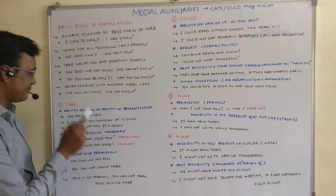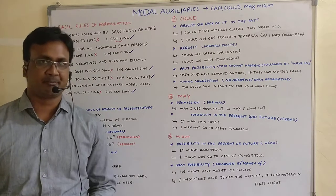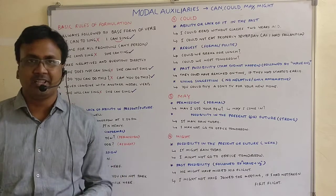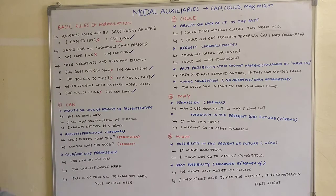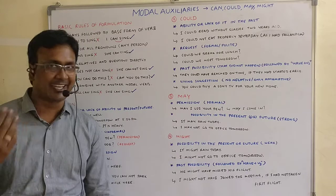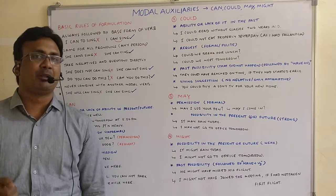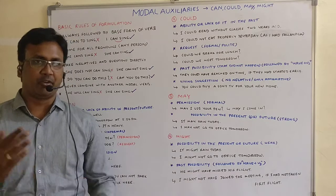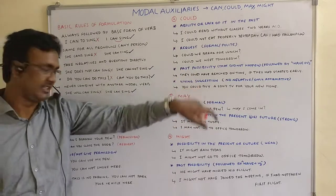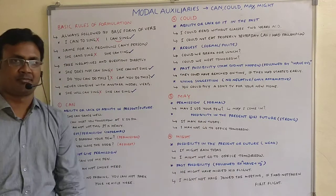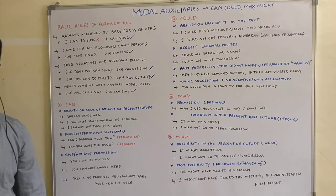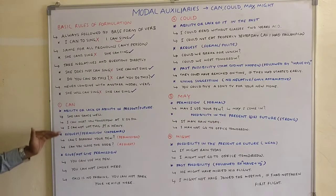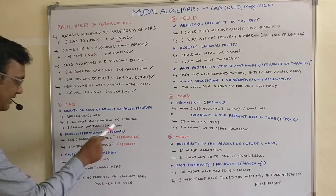The second use case of 'can' is request and permission — but this is where we misuse or overuse it. Please remember: 'can' should be used only in informal cases, when you are talking to a friend or relative. For example, 'Can I borrow your pen?' or 'Can I come in?' — you are taking permission, but it is an informal request. If you want to make it formal and more polite, you have 'could' and 'may.' 'Can you close the door?' is again an informal request.